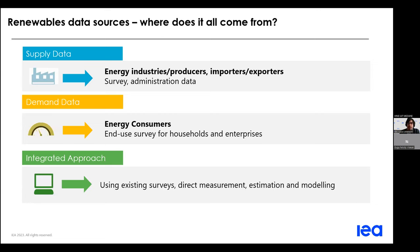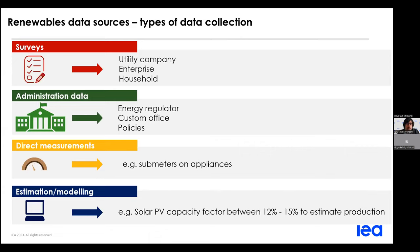Now let's see the data sources and types of data collection. For the supply side, data can be collected from energy producers, importers, and exporters, while for the demand side it can be collected from households, enterprises, and so on. Data can be collected through surveys or using administrative data, but very often an integrated approach is adopted — using different ways of collecting data and making estimations where needed. Surveys are the best ways of collecting data since you collect directly what you need, however they are usually time-consuming and expensive, so it's difficult to carry them out every year. What is generally done is taking a survey every two or three years and making estimations for the coming years.